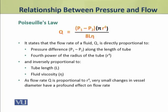Yahan pe hum is equation mein bahut wazih taur par dekh sakte hain ki chunke flow rate fourth power of the radius se directly proportional hai, isliye agar radius of the vessel mein bahut thodi si tabdili bhi aati hai, to it has a profound effect on the rate of flow of the vessel.